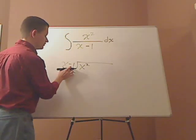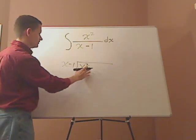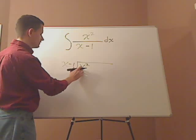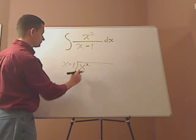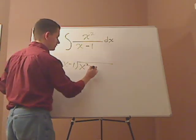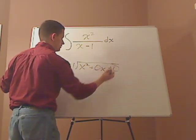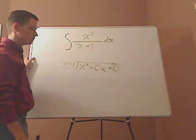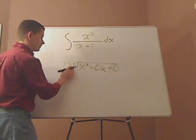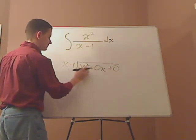Basically you want to take x minus 1 and see how many times that can go into x squared. Let's put spacers in there. So x minus 1 can go into... I look at the first one.